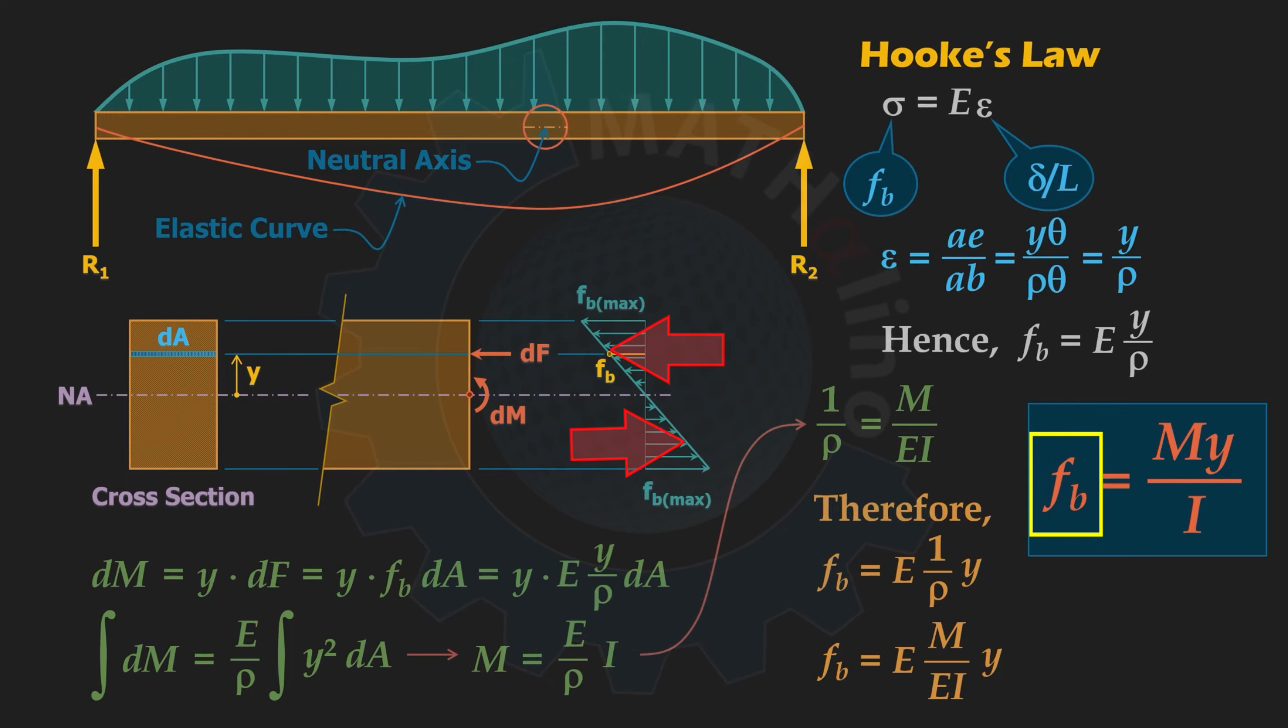This is the reason why the maximum bending stress will occur at the farthest fiber from NA, and we use c to denote the distance from NA to the farthest fiber. For maximum bending stress in the section, the equation will become Mc over I.